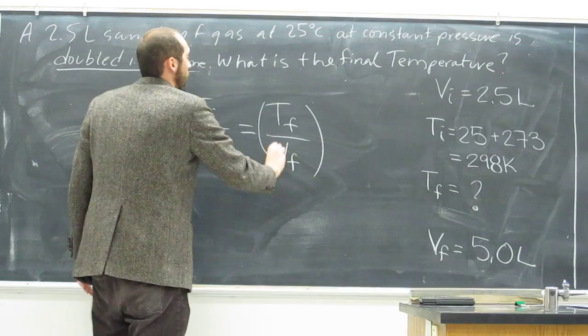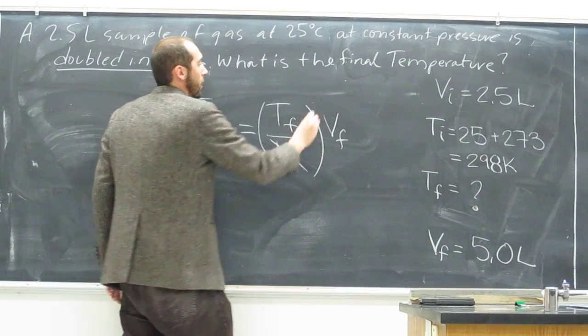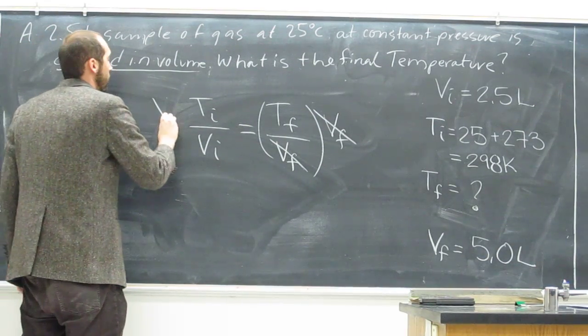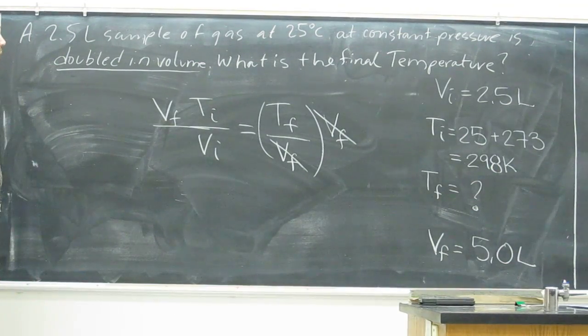So the first thing we have to do is multiply both sides by final volume. If we do it on that side, it cancels out. So we've got it like that now. This is our new equation.